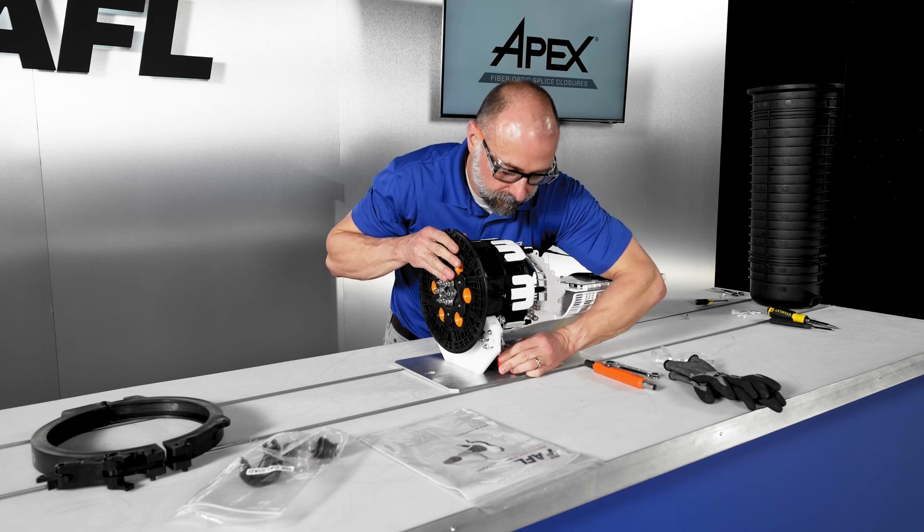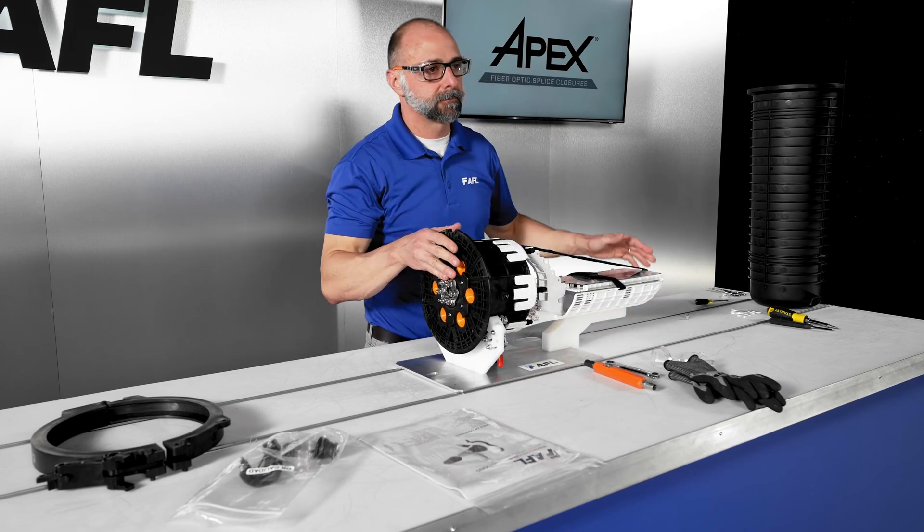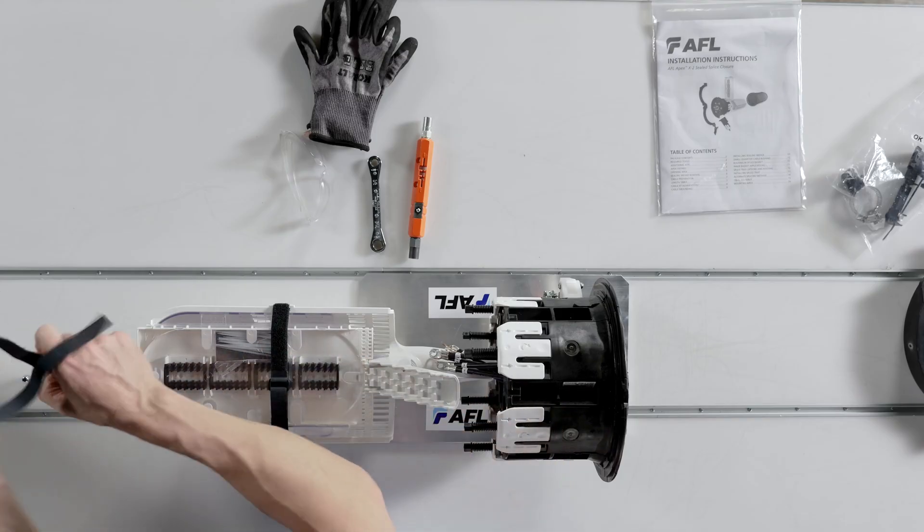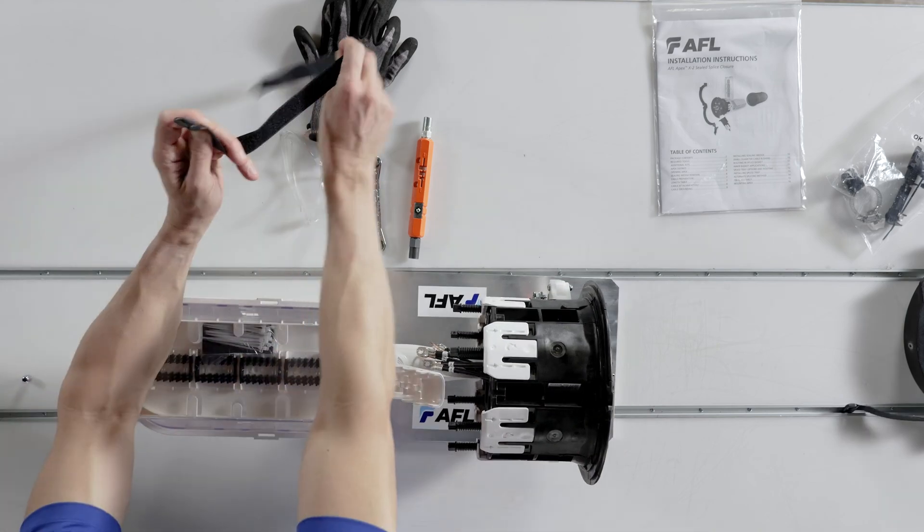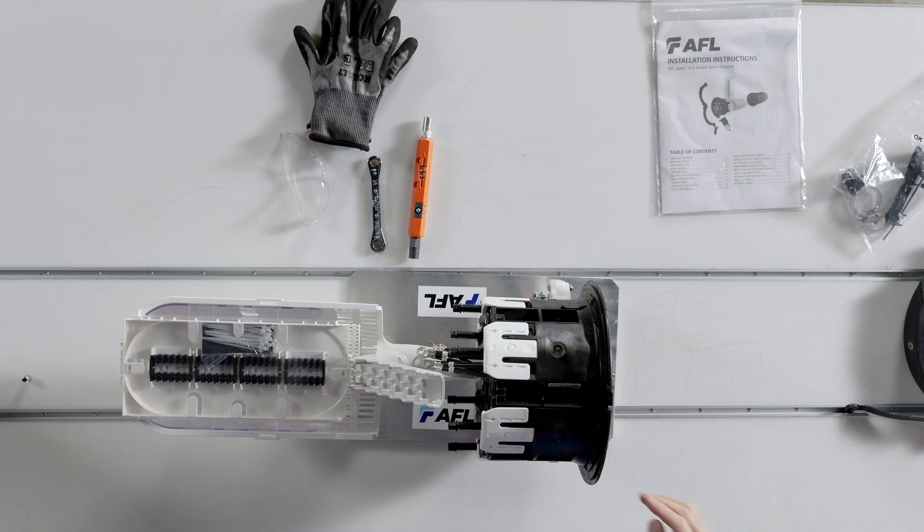Simply align the closure with the alignment tab at 12 o'clock and secure side latches. Remove both Velcro straps and put in a safe location until the installation is complete. Remove all packing and bags from shipping and discard material properly.